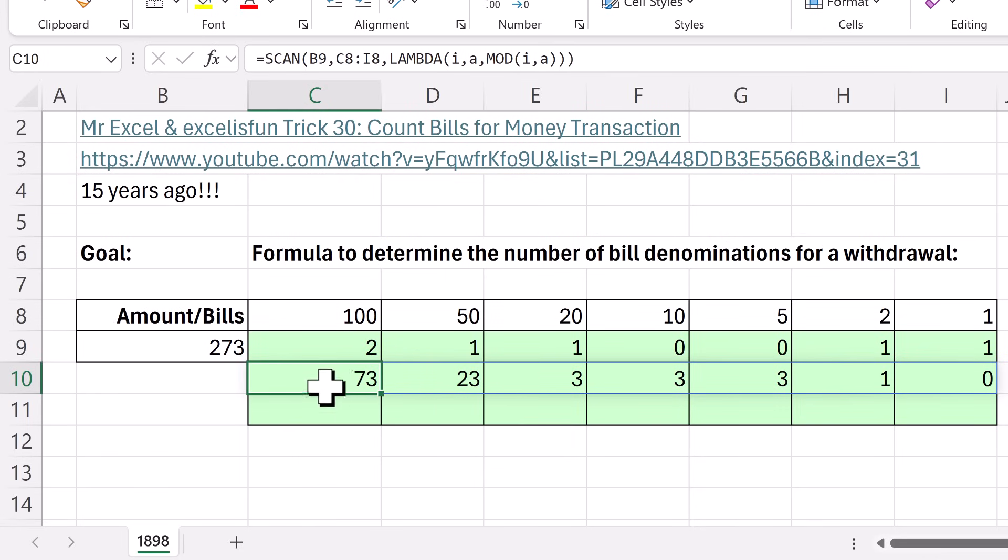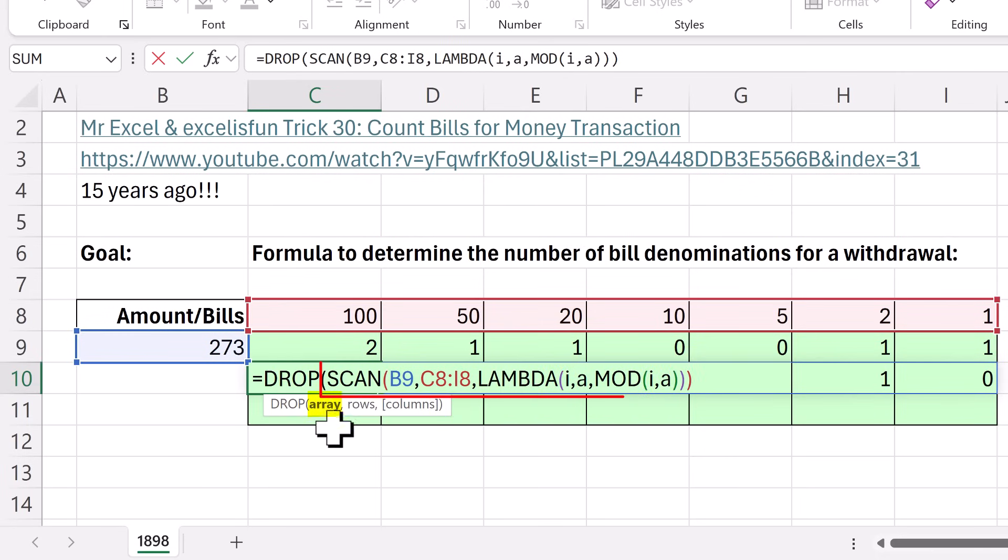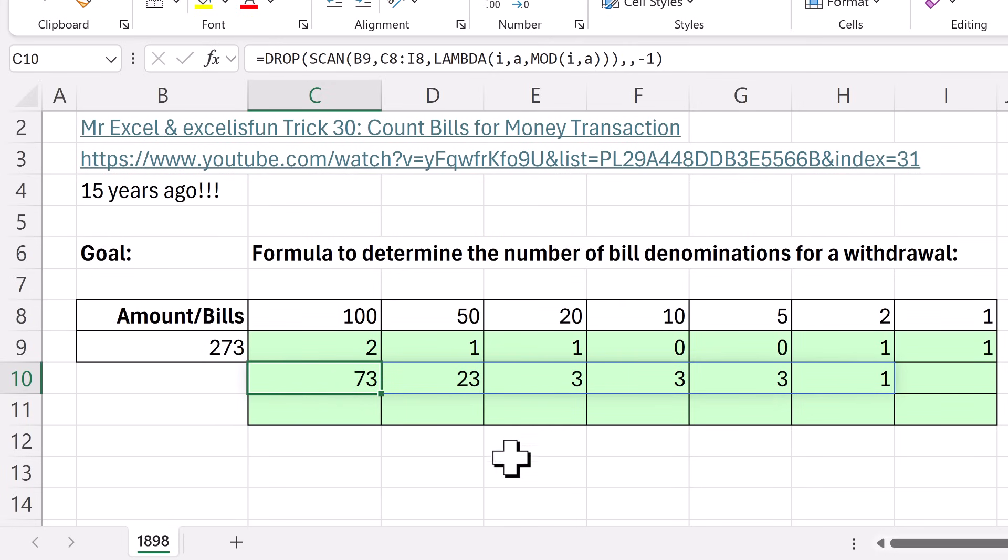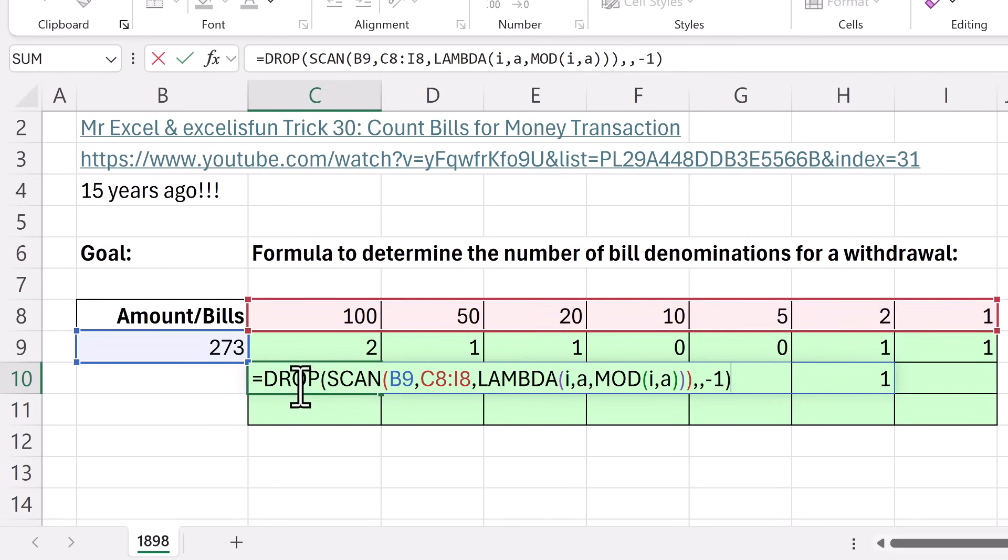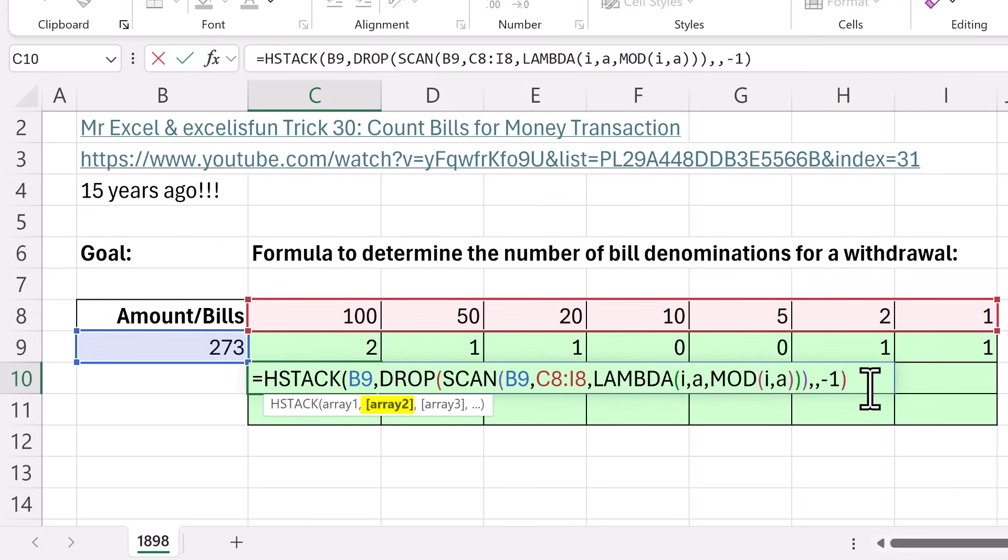Now, here's the thing. When we do int, we actually need 273 right here, and then 73 needs to be in the second position, 23 in the third position, and so on. So watch this. I'm going to say, drop. There's the array. Comma, comma. I want to drop that last column. I don't need zero. Now, positive one drops from the left. Minus one drops from the right. And that's exactly what we want. Now, we want to shift it over and put 273 right there. Well, that's easy enough. With hstack, initial value, comma. There's the array. Close. Control enter.